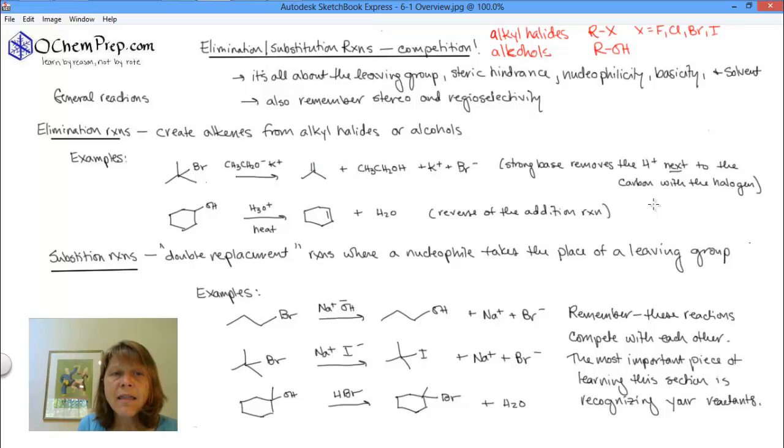So, what is getting eliminated is the Br and an H. So, as it reacts, the H on the alkyl halide ends up on the alcohol. So, you make an alkene, an alcohol. The K plus, of course, is your spectator, and here's your leaving group, Br minus.